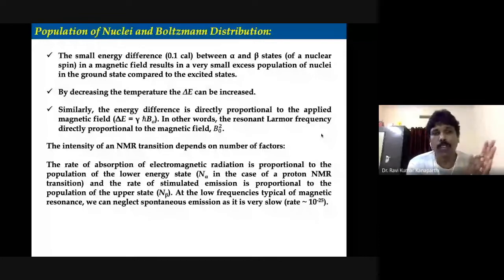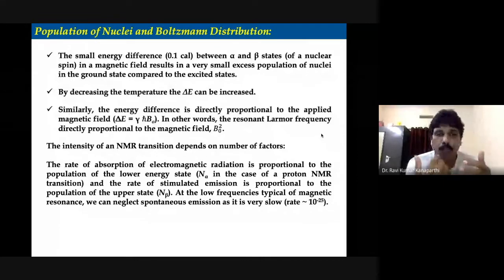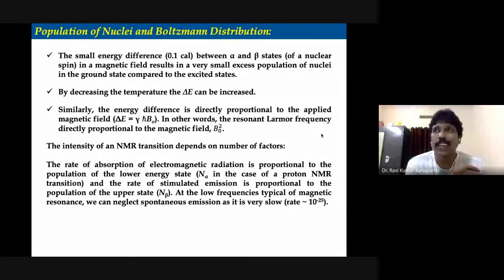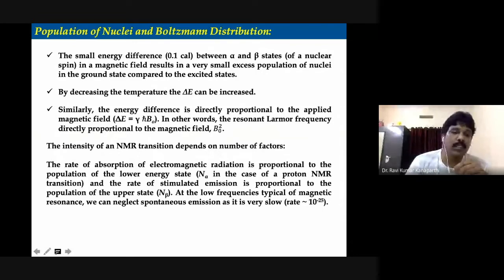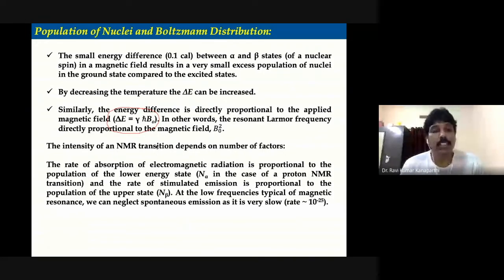What can actually improve the NMR sensitivity? NMR sensitivity can be improved by three major factors. One is the gyromagnetic ratio. Remember the expression: ΔE, the energy difference between the two nuclear spin states for a half-spin nucleus, is given by γℏB0. So the energy difference depends upon gamma. If gamma increases, the energy difference basically increases.